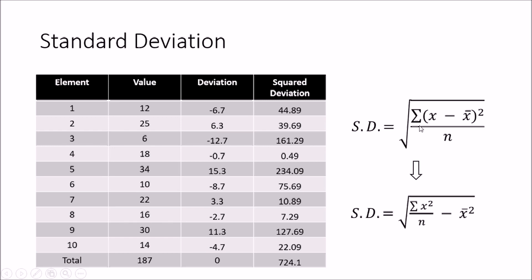Likewise you will get a set of positive numbers. So sigma of (x minus x-bar) squared is the total deviation for each and every element in the data set. Now I need the deviation for an individual element, so I divide the total deviation by n — the number of elements — giving me the average deviation for any value in this data set.